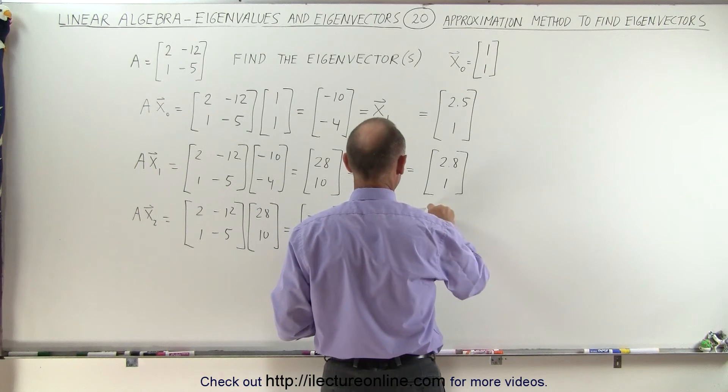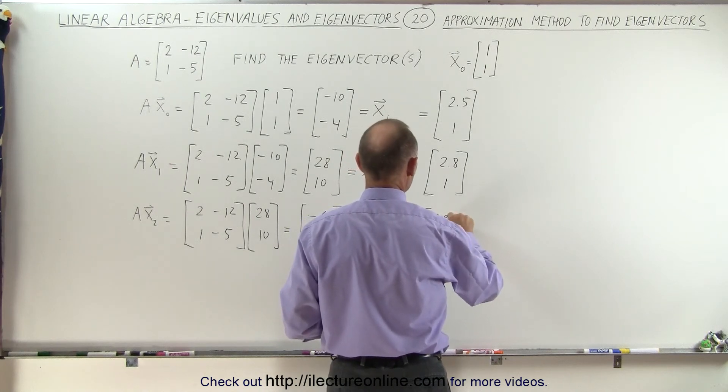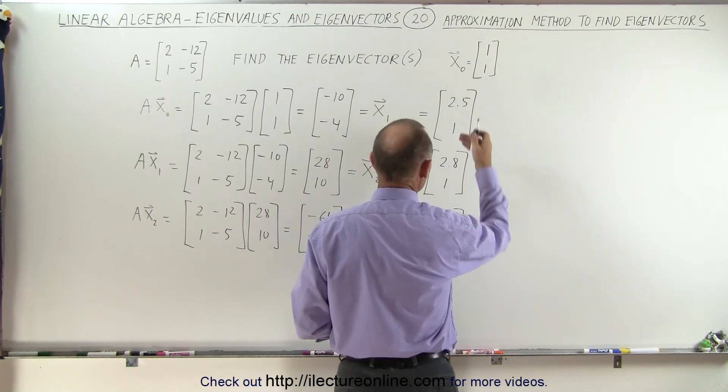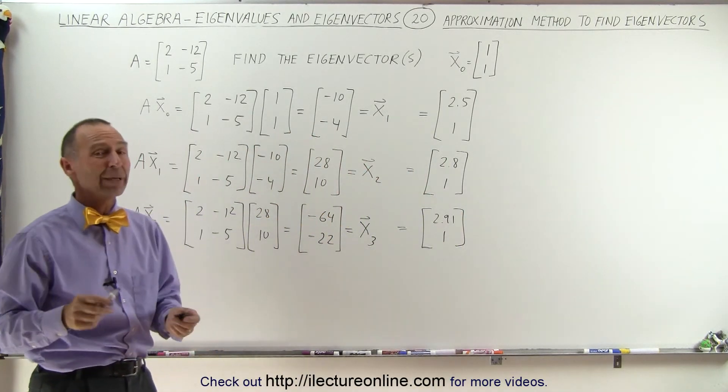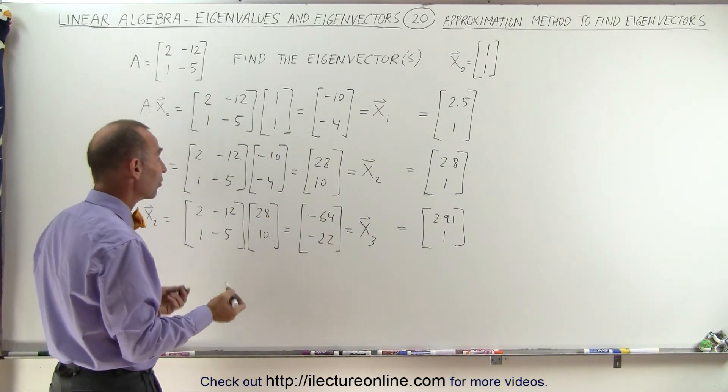So this ratio now becomes 2.91 to 1. And you can see that I'm getting closer and closer to a 3 to 1 ratio. I'm really beginning to suspect that my eigenvector is 3 to 1.